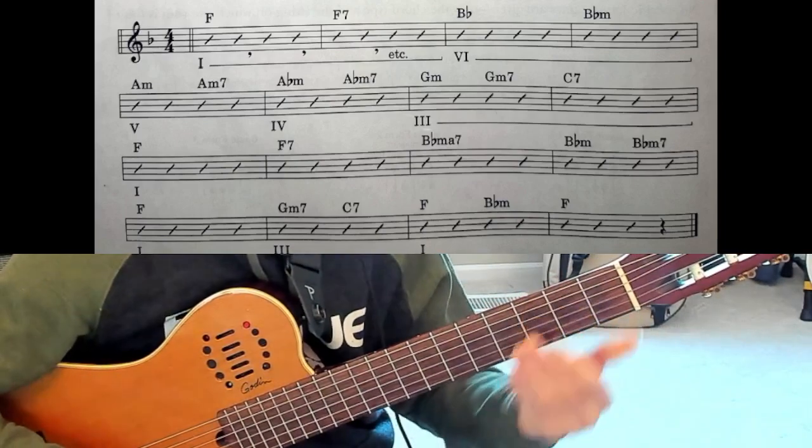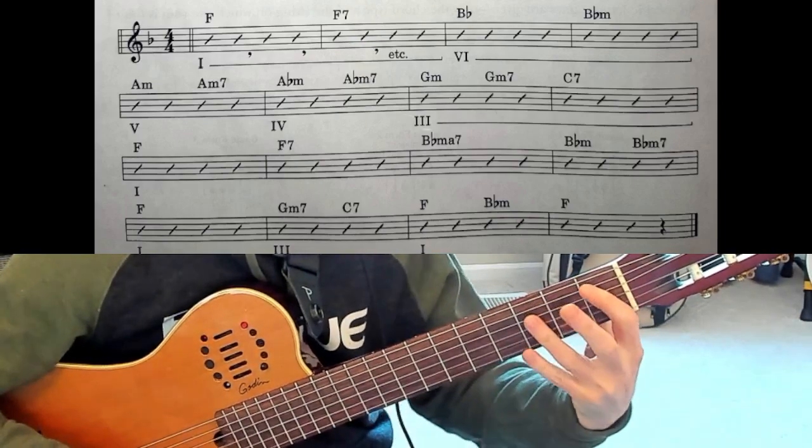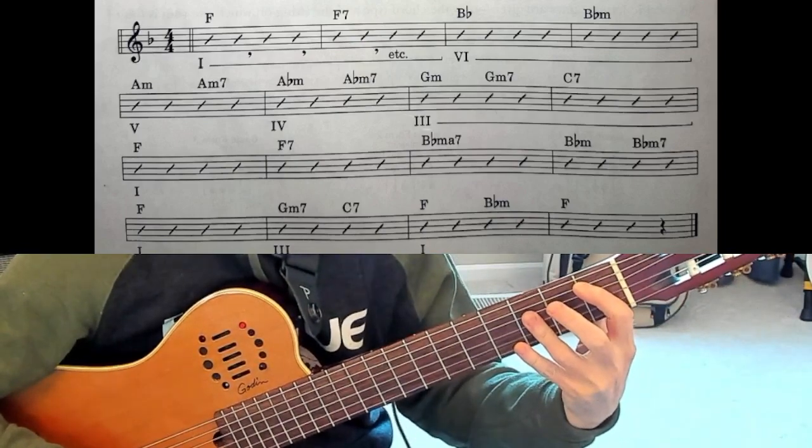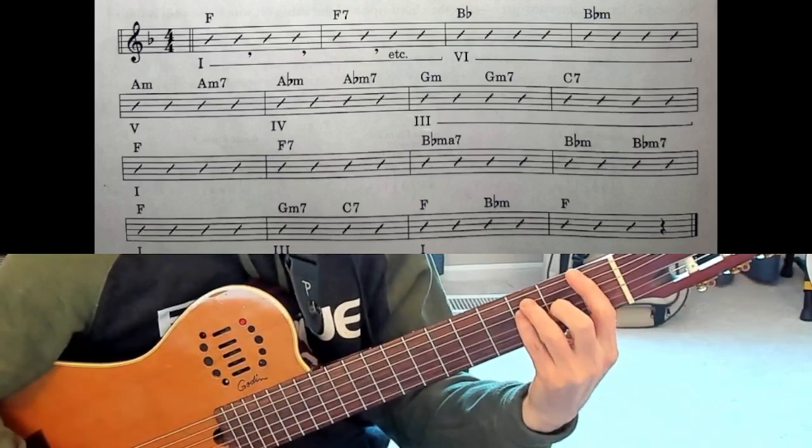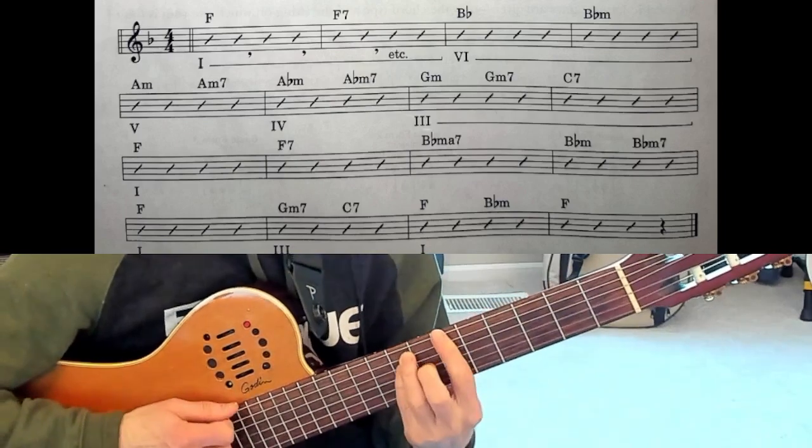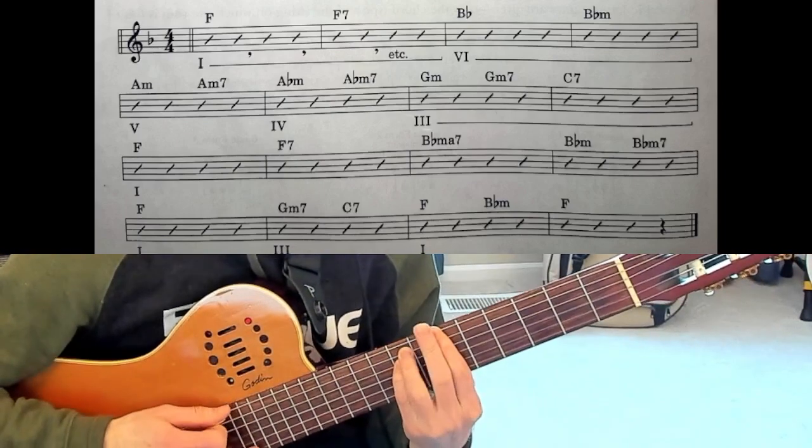The Bb chord is at the sixth fret so you may want to say alright well Bb's first fret on the A string that's closer. Yes that's closer but what he's indicating is he wants this F major and then going up to Bb major here on the sixth fret and then Bb minor.